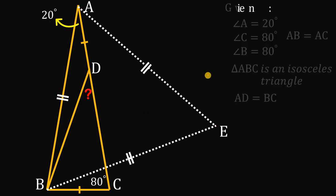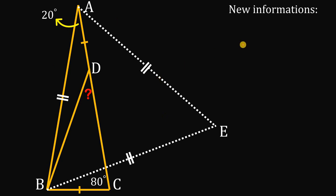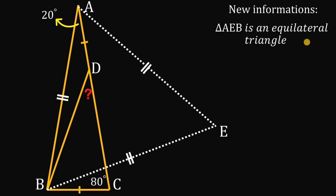Since AEB is an equilateral triangle — which is also equiangular — all angles must be equal, so angle E is 60 degrees. Angle BAC is also 60 degrees. Since we already have 20 degrees at angle A, the remaining angle EAC must be equal to 40 degrees.